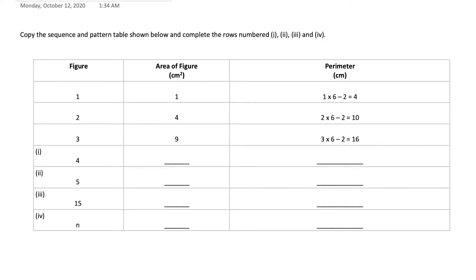In this video we are looking at sequence and pattern. We are asked to complete the table. We look at the first column and we see figures — figure 1, 2, 3, 4, 5, then 15, then the nth figure. In the second column we have the area of the figure, so we need to identify the sequence or pattern.